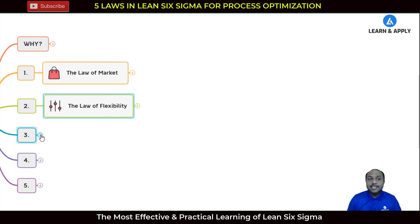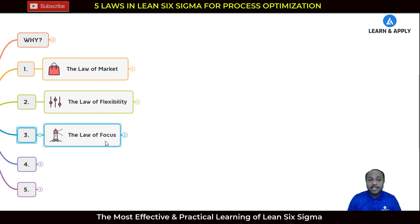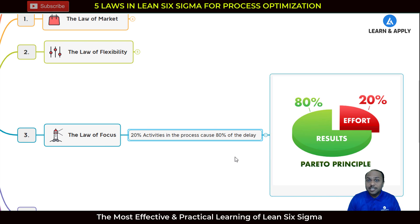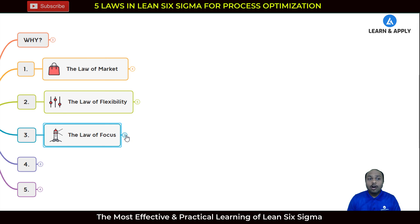The third law in Lean Six Sigma for process optimization is the law of focus. This is not new to anyone because everyone is aware of the 80-20 principle — 20% of the activities in the process cause 80% of the delays, dealing with the Pareto principle. This law indicates that we need to identify which 20% of activities are contributing to 80% of the waste and take initiatives to reduce them.